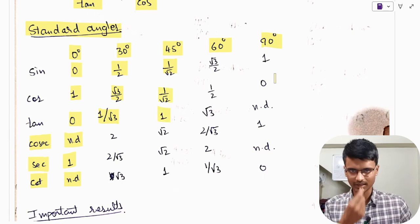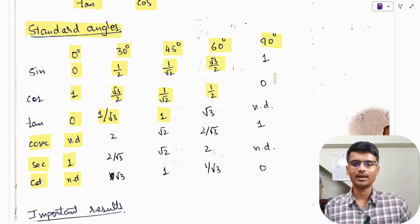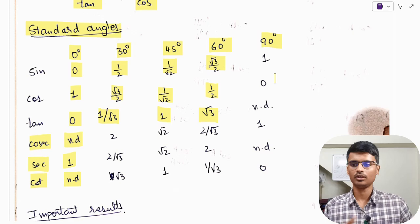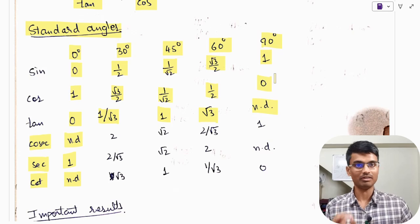For 60°: sin 60° = √3/2, cos 60° = 1/2, tan 60° = √3. For 90°: sin 90° = 1, cos 90° = 0, tan 90° is not defined. These are very important formulae — you need to know all of them.